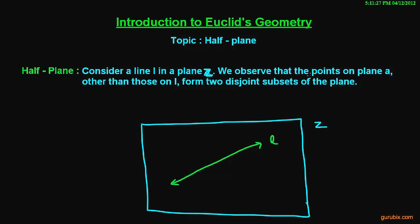We observe that the points on plane Z other than those on line L. Suppose we have point A, point B, point C and point D.